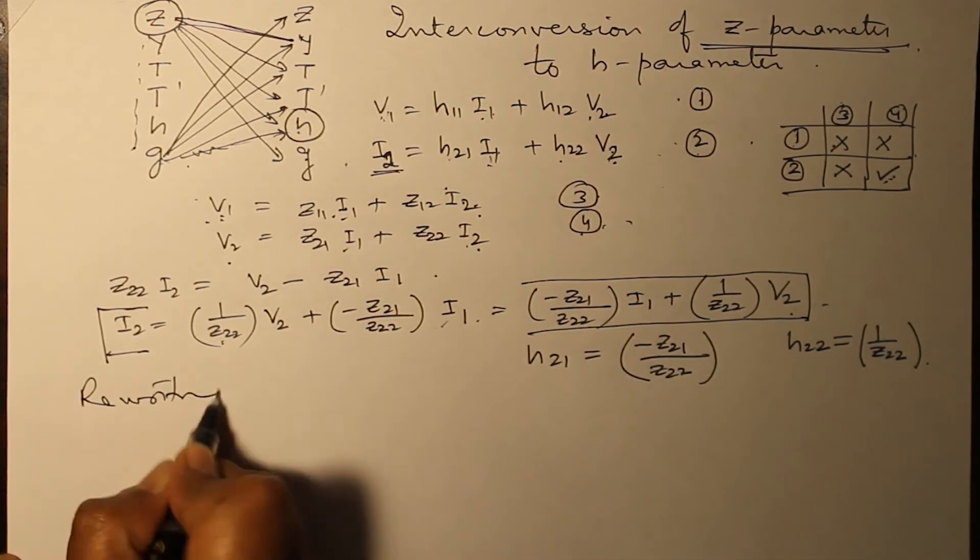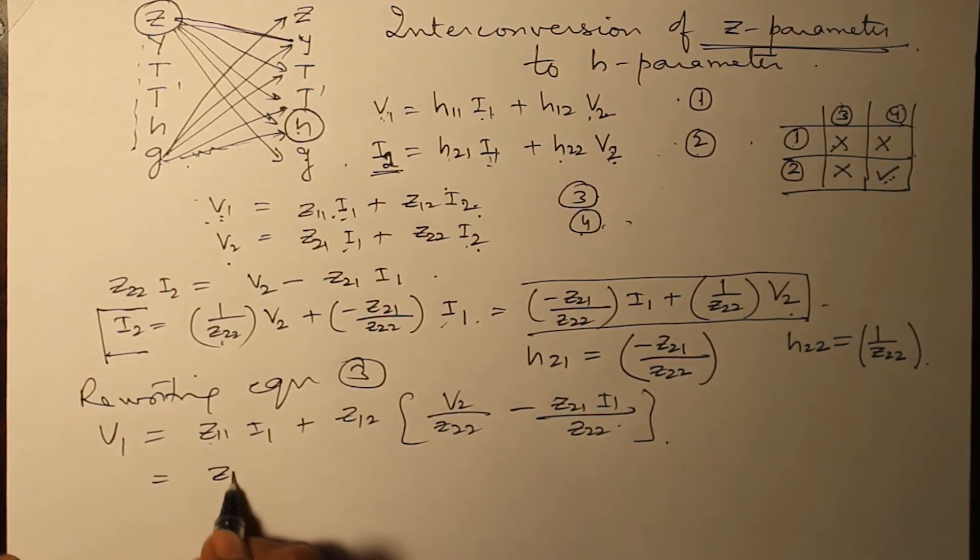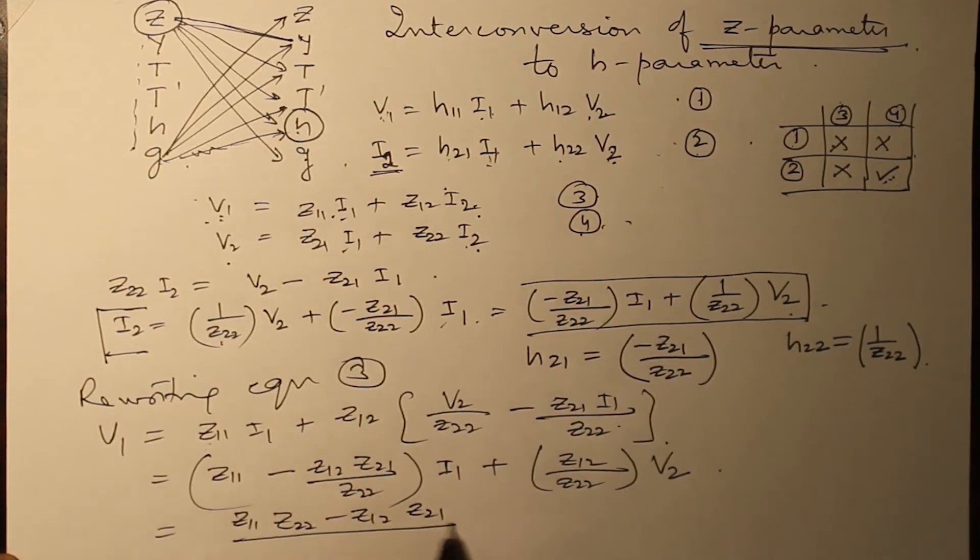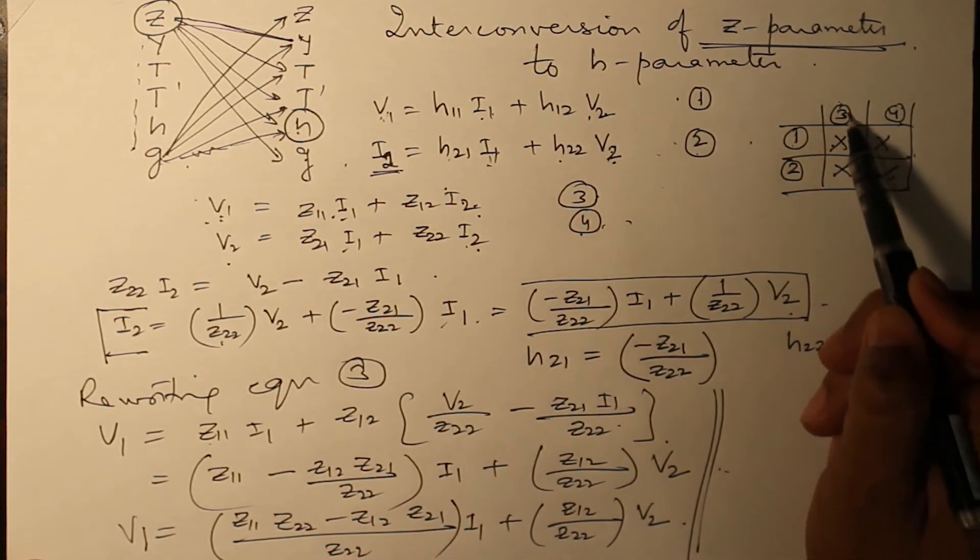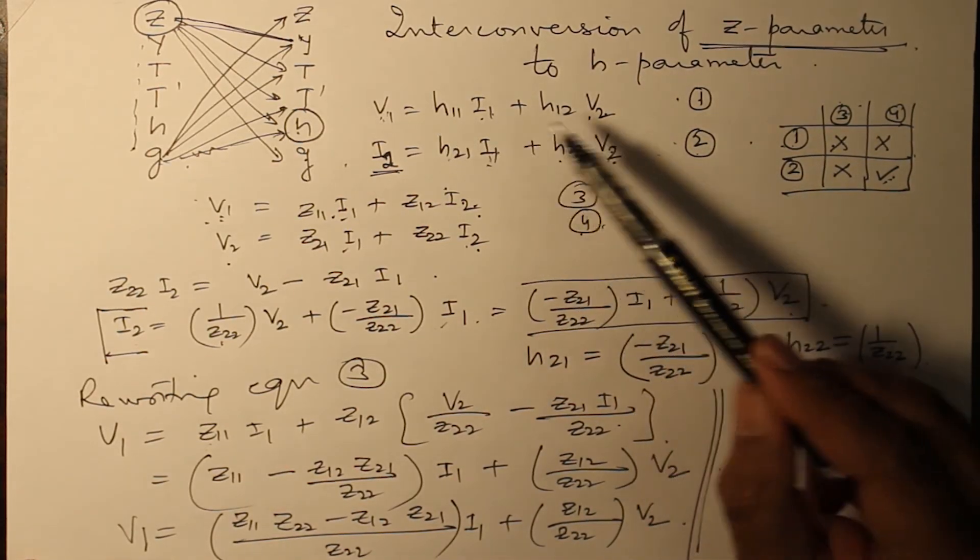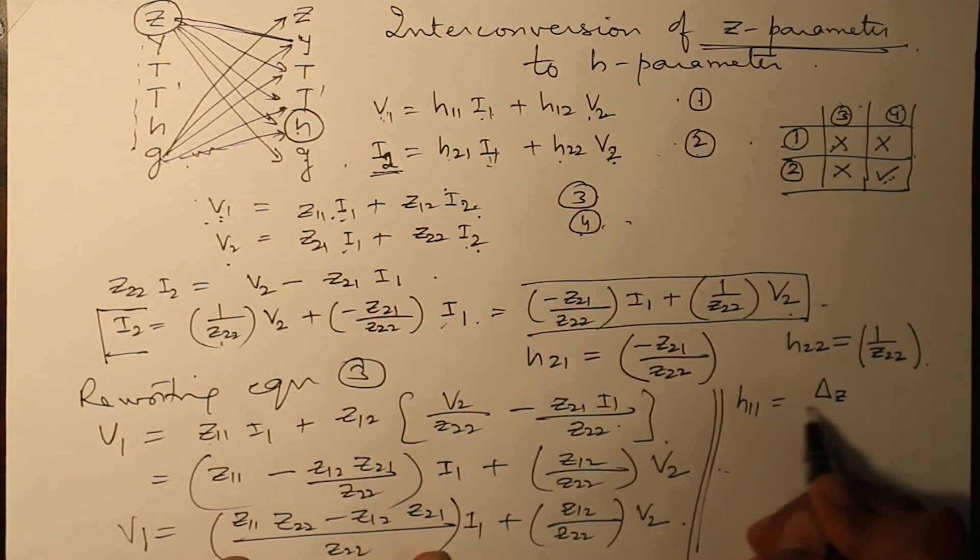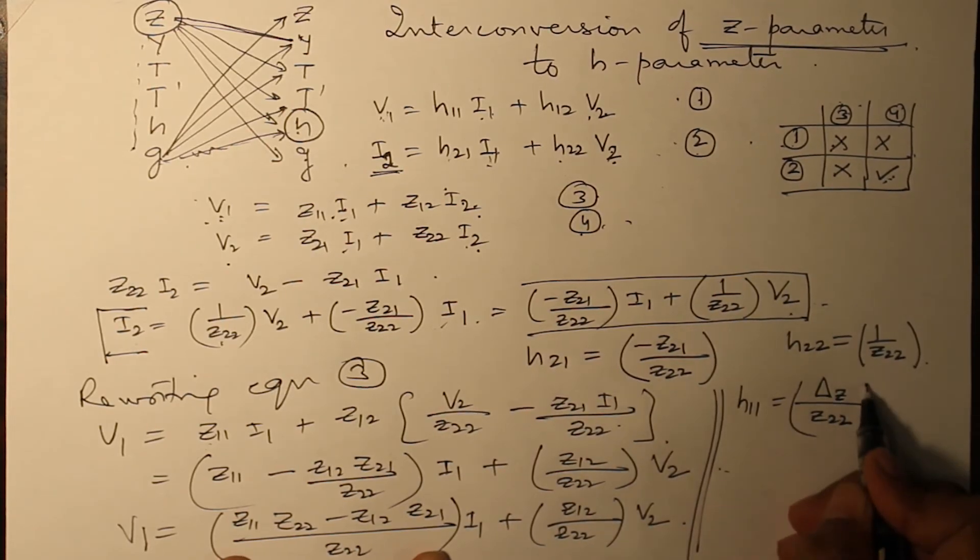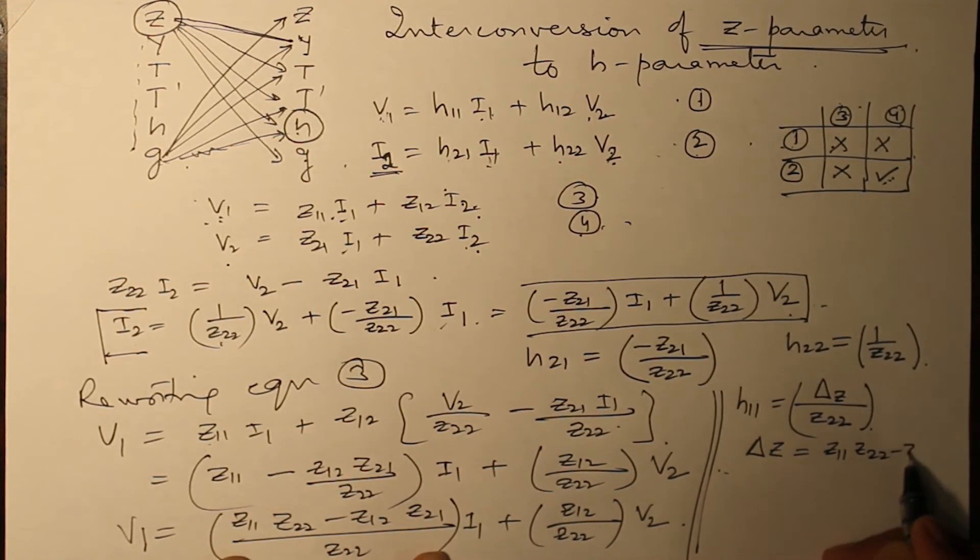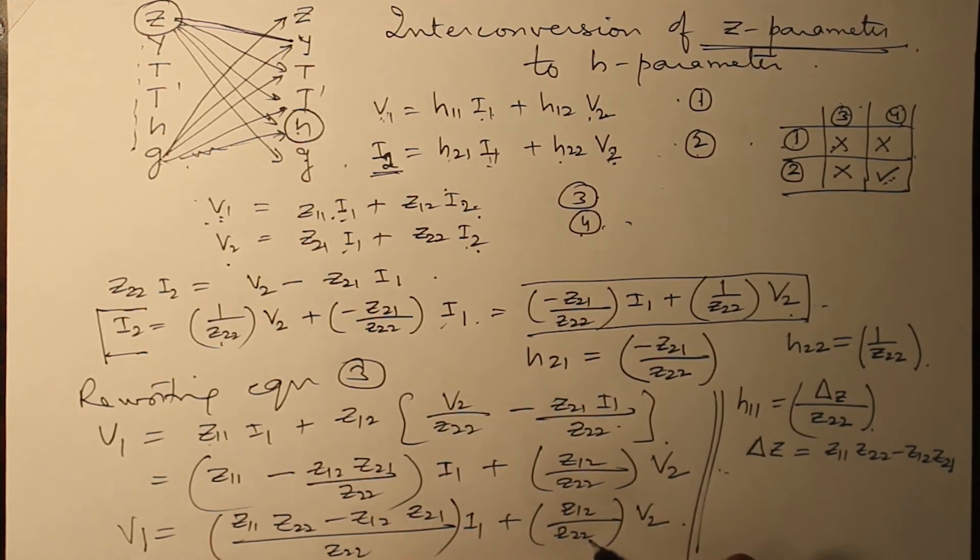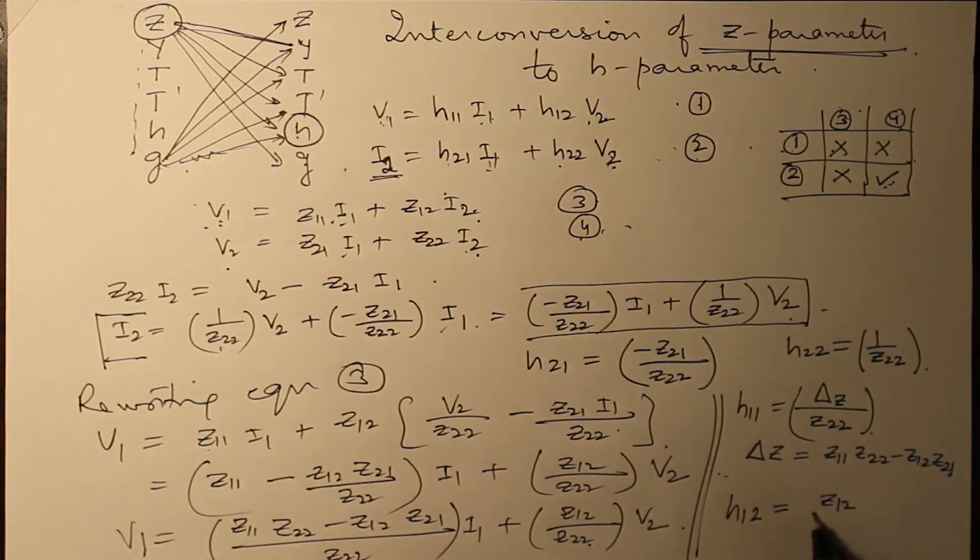So we can rewrite V1 is equal to... bring the terms of I1 together. This is already there. Again by comparison we can find out V1. So one and three we are going to compare. V1 is in terms of H11 I1 plus H12 V2. So this whole term is H11: Z11 minus Z12 Z21 over Z22, which means delta Z over Z22, where delta Z is determinant of Z parameter, that is Z11 Z22 minus Z12 Z21. And similarly, H12 is equal to Z12 over Z22.